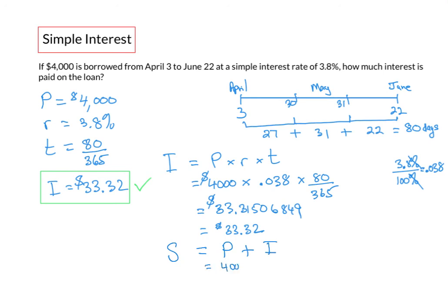In our case, our principal is $4,000, and the interest we calculated was $33.32. So we would need to pay back $4,033.32 in total.